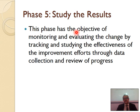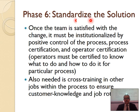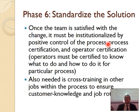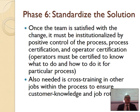Then you start to study the results. This phase has the objective of monitoring and evaluating the changes. You track and study the effectiveness of the improvement efforts through data collection. Number six, you standardize it — you make it standard. Once the team is satisfied with the change, you institutionalize it through positive control of the process. The accounting department, quality people — everything is written, documented, and implemented across all branches. Cross-training and job rotation are needed to ensure knowledge transfer. You update your website, manuals, brochures, and employee training for new staff and customer orientation. Once you implement it, it needs to be rolled out and standardized.